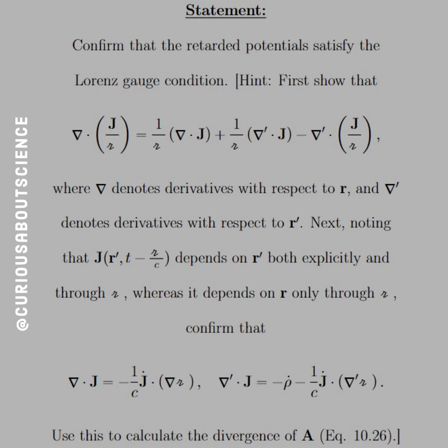Confirm that we have divergence of J is equal to negative 1 over C, J dot dot product of the divergence. Del prime with J is equal to negative rho prime minus 1 over C, J dot dot product del prime script R. Use this to calculate the divergence of A, equation 10.26.